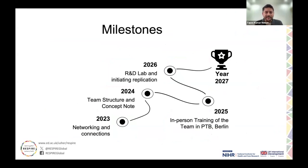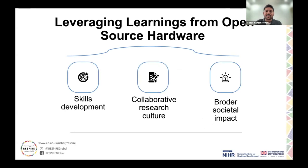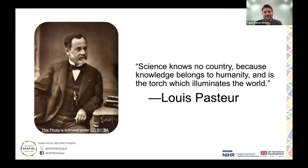We have prepared a milestone timeline. Networking and team are already in place. In February next year we have in-person training where everyone will go along with Professor Bandhan's team for hands-on experience. The R&D lab will do the replication in 2026, and in 2027 we will have the unit ready for trials at KM Hospital Research Center after obtaining regulatory approvals. This will support skill development and collaborative research culture, with a broader societal impact. As Louis Pasteur said, science knows no country because knowledge belongs to humanity and is the torch that illuminates the world.